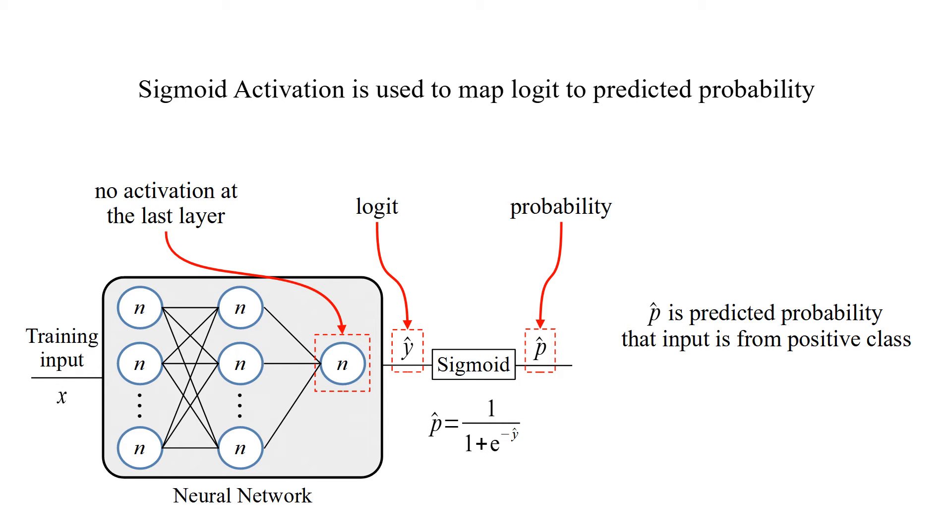P hat is predicted probability that input is from positive class. 1 minus P hat is predicted probability that input is from negative class.